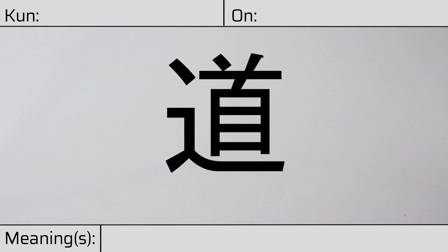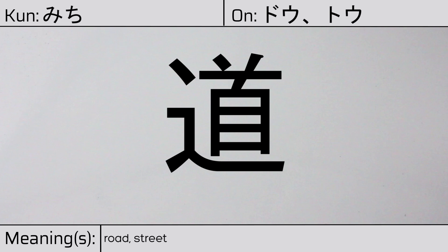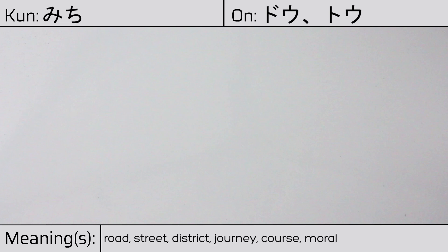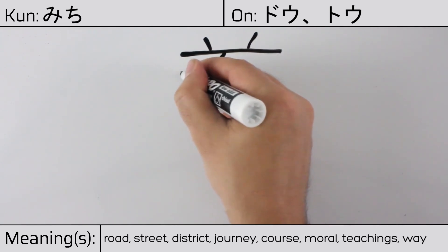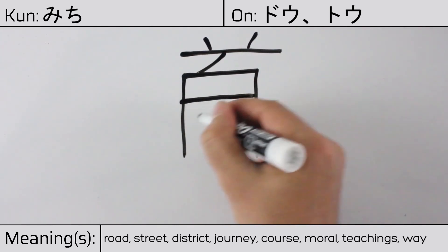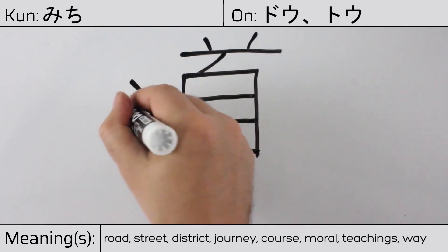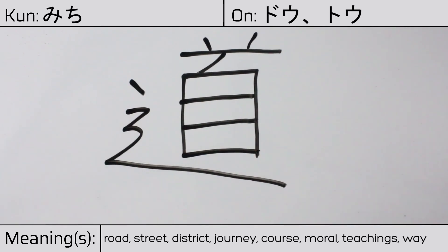Welcome to this lesson on Japanese kanji. Today, we'll be discussing this character. This kanji has a kunyomi or Japanese reading of wichi, and it has onyomi or Chinese readings of dou or tou. This character has the meanings road, street, district, journey, course, moral, teachings, or way. Here is the stroke order.